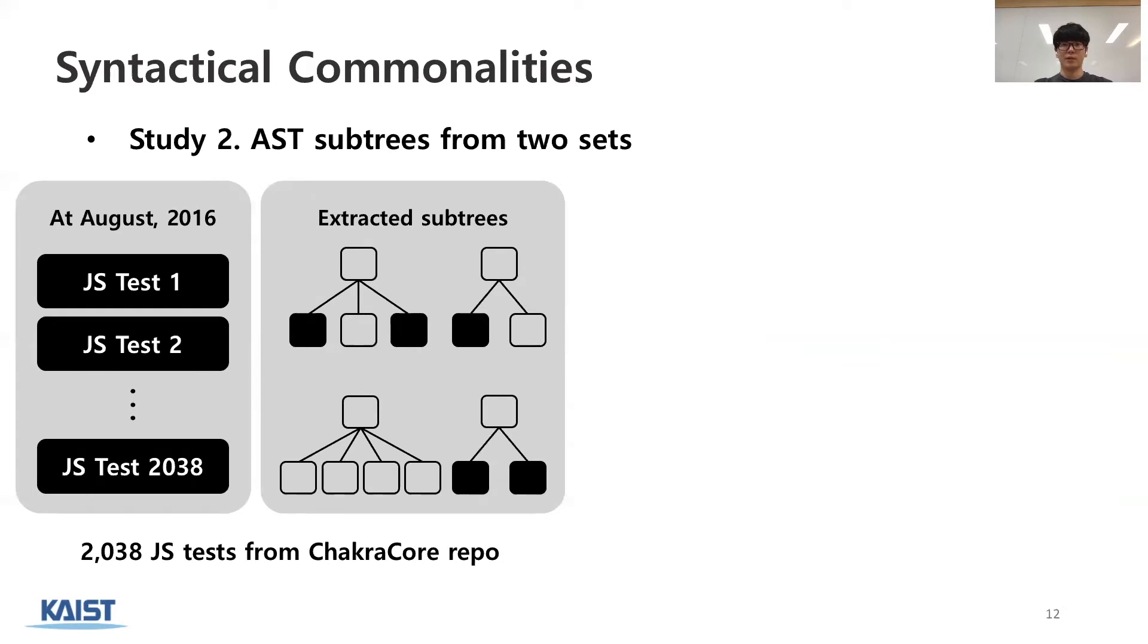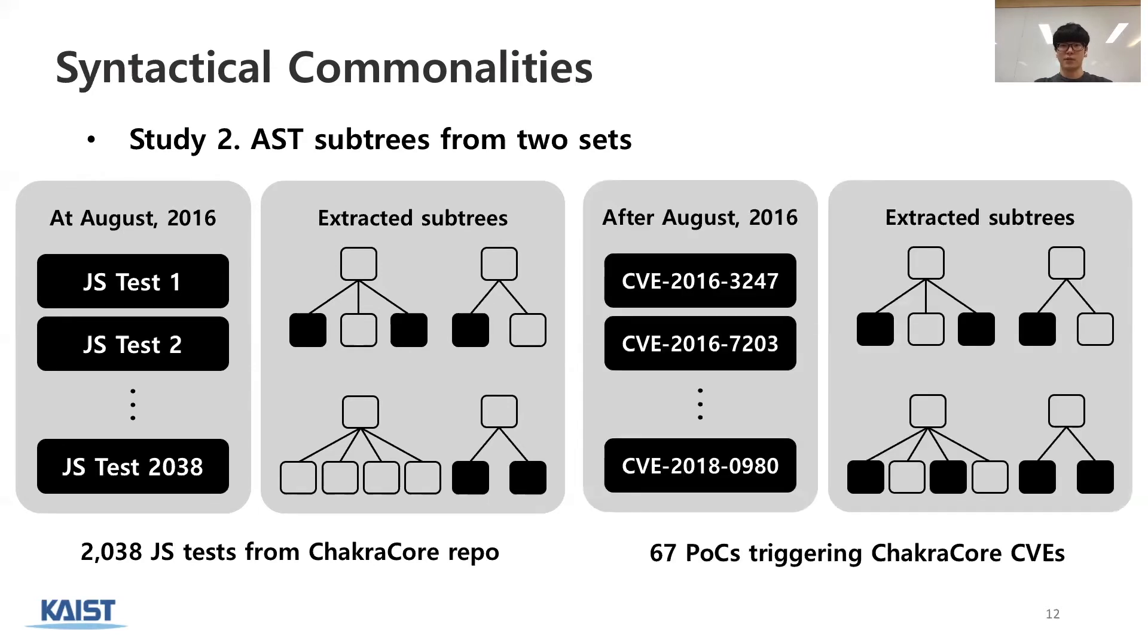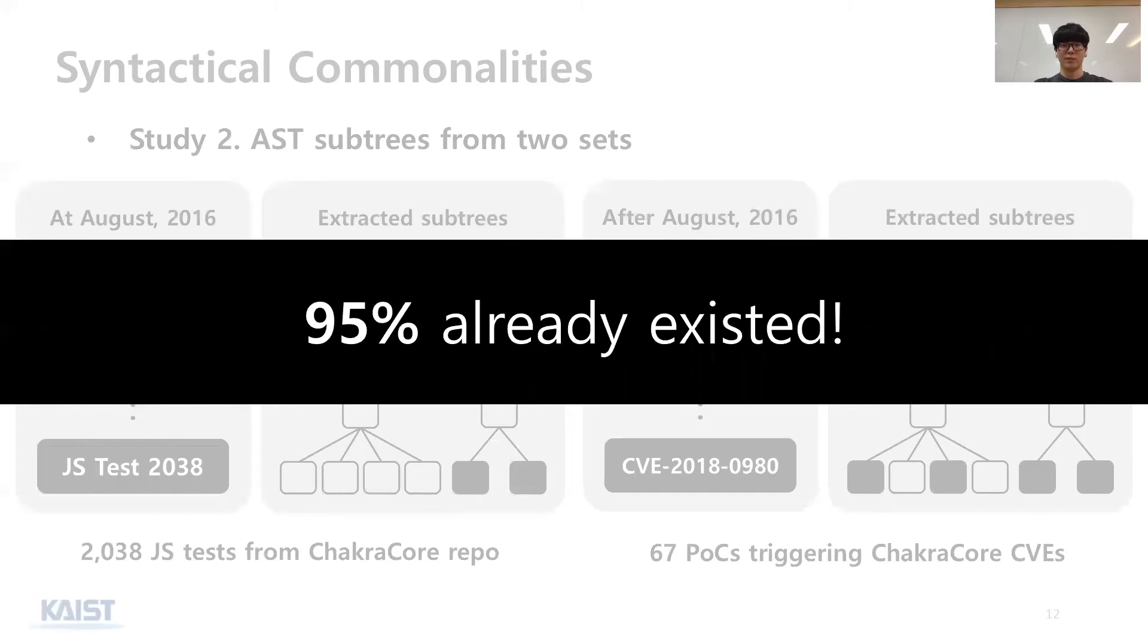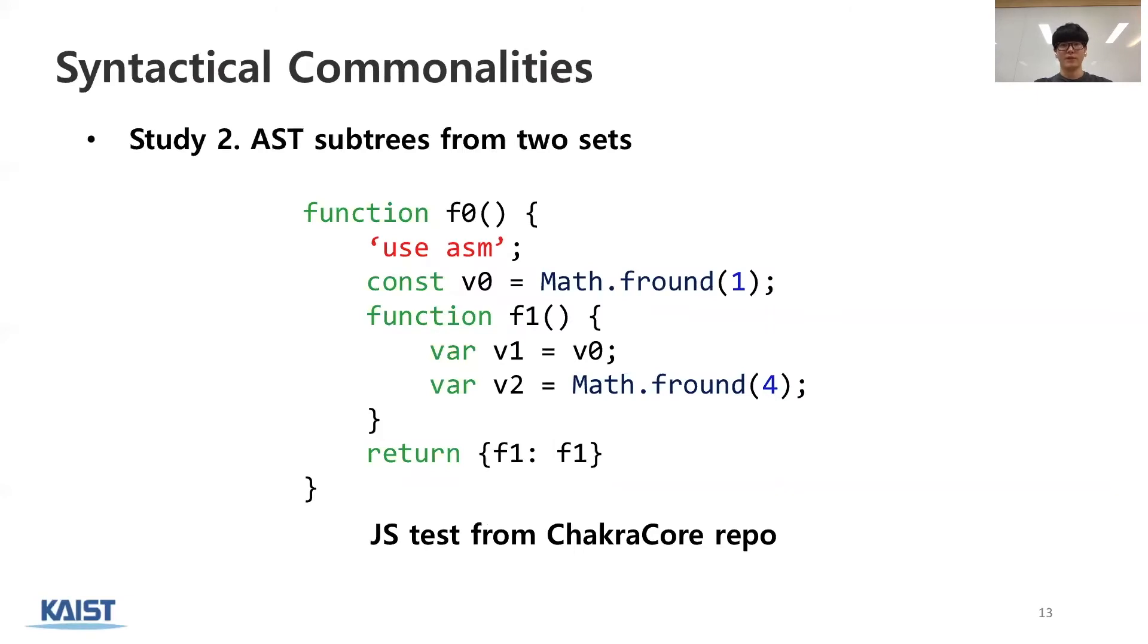For syntactical commonalities, we compared AST subtrees extracted from two sets. We collected 2038 JS tests from ChakraCore repository as of August 2016 and extracted subtrees from the set. We also collected 67 POCs triggering ChakraCore CVEs reported after August 2016. Then, we checked whether subtrees from the second set exist in the first set. Surprisingly, 95% of subtrees extracted from the second set already existed in the first set. For instance, this is a snippet of JS code in the first set. And this is a POC triggering a CVE reported after that. As you can see, these two codes are syntactically very similar.